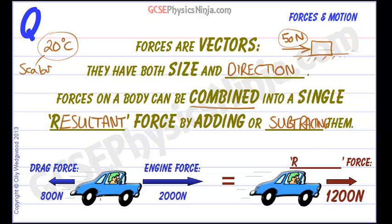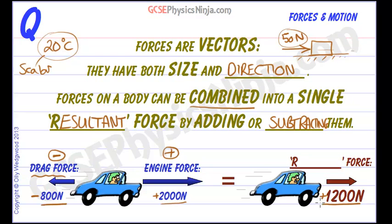For example, here we have a car which has a drag force of 800 newtons backwards and an engine force of 2000 newtons forwards. We can think of the backwards force as a minus quantity and the engine force as a positive quantity. So if we add these together: minus 800 newtons plus 2000 newtons gives us plus 1200 newtons, which is in the positive direction, going to the right.